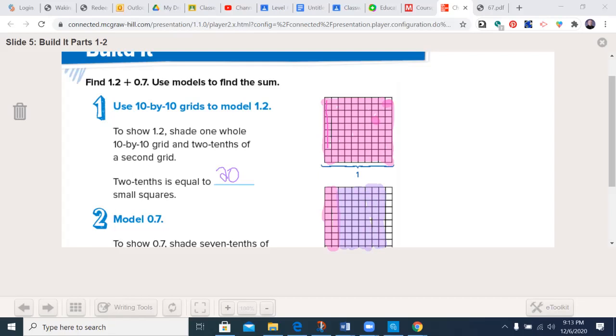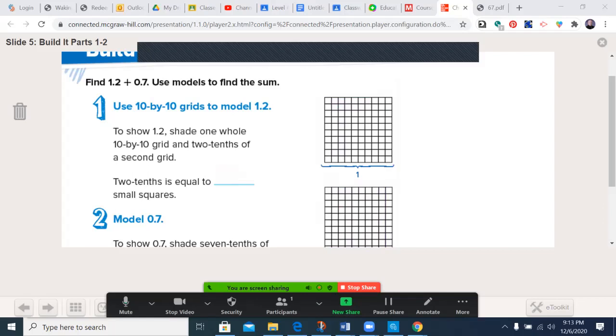To show 0.7, you shade seven tenths. So now on your step three, you can see that when we get to step three, I have a whole one pink, and now this one that's using the tenths place, I have nine out of the ten rows colored in. So let me clear those drawings.